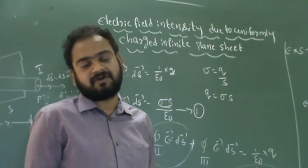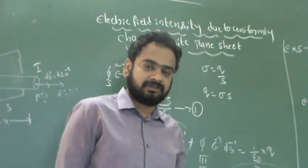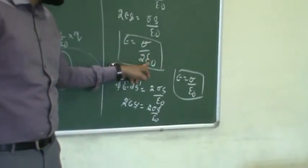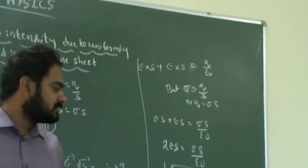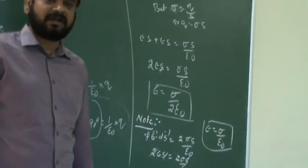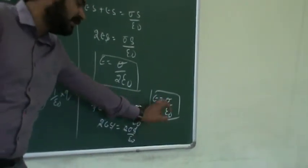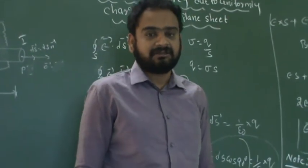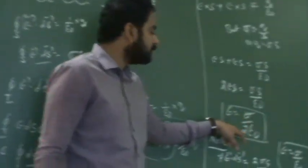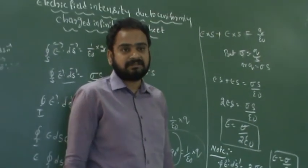To summarize: the formula for electrical field intensity on a thin plane sheet is E equals sigma by 2 epsilon naught, where sigma is the surface charge density. The expression for electrical field intensity at any point due to a thick sheet is E equals sigma by epsilon naught. Sigma by epsilon naught is for a thick plane sheet, and sigma by 2 epsilon naught is for a thin plane sheet.